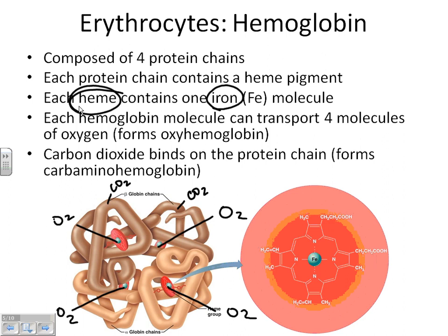I love to ask on a test: how many oxygen molecules can bind to one hemoglobin molecule? Four oxygens to one hemoglobin. I could also ask: how many iron molecules are found in one hemoglobin? Four. Really important to know. So that was red blood cells — they transport oxygen because they have hemoglobin in them.